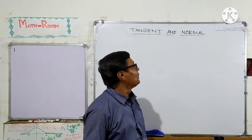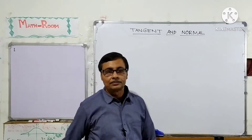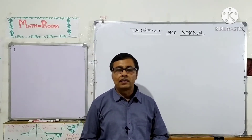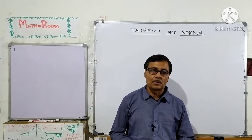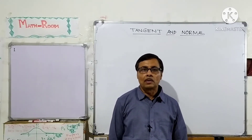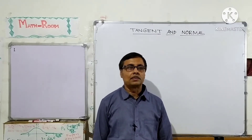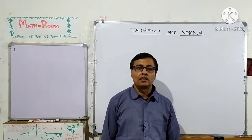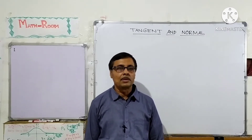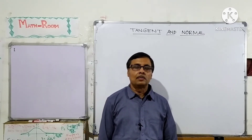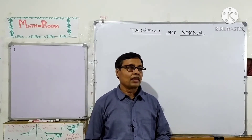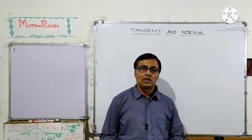Today's discussion is about tangent and normal. A tangent means a straight line which touches any curve at only one point. This straight line is called the tangent to the curve.